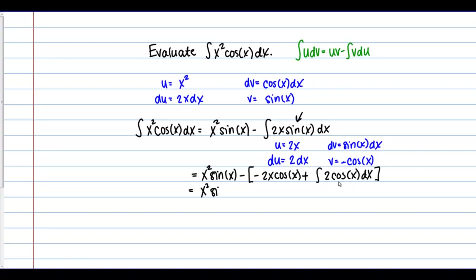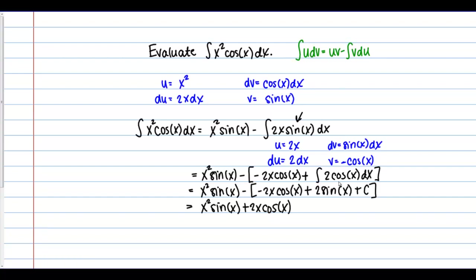Going through with this, I have x squared sine of x, then minus, and in my brackets: negative 2x cosine of x, plus — and the integral of cosine gives sine — plus 2 sine of x, plus the constant of integration. Distributing the subtraction sign, my final answer is x squared sine of x, plus 2x cosine of x, minus 2 sine of x, plus c. I can write plus c or minus c — it doesn't really matter since it's just a constant of integration.